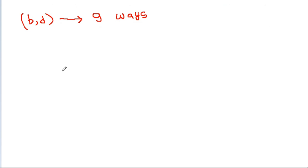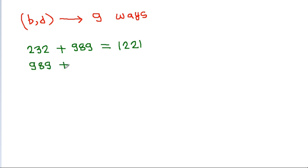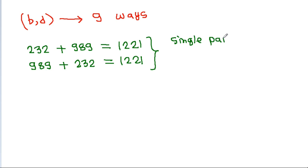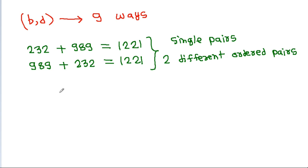Note that 232 plus 989 equals 1221, and also 989 plus 232 equals 1221, but these are a single pair. We have A plus C equals 11, where the palindromes are ABA and CDC.